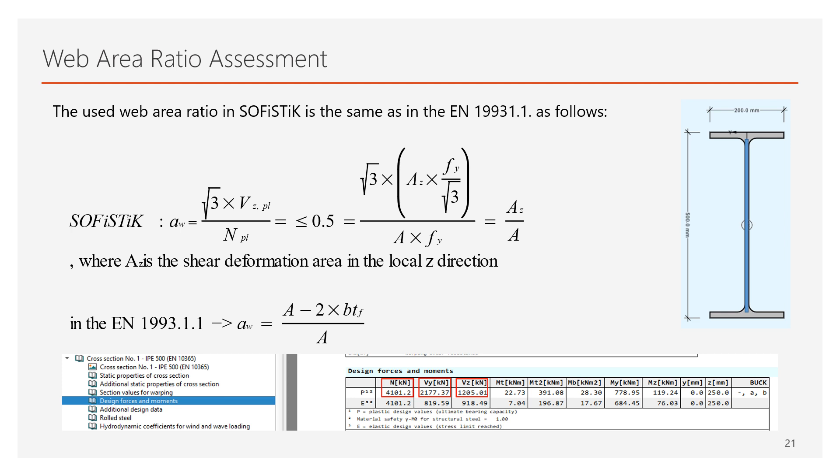Now, let's see how module AQB considers the web area ratio. Basically, it calculates AW from the square root of 3 multiplied with VZPL, which is the plastic shear resistance of the cross section in local z direction, divided with the plastic resistance of the normal force of the cross section NPL, which value at the end should be less than 0.5.